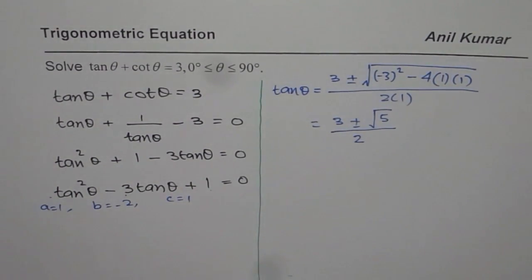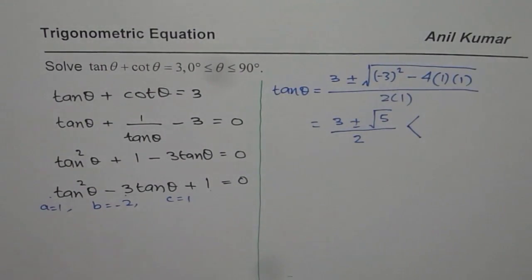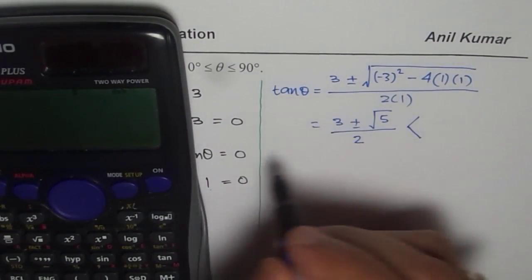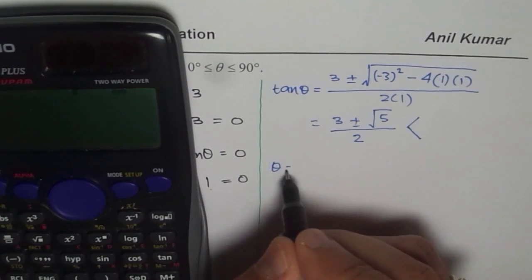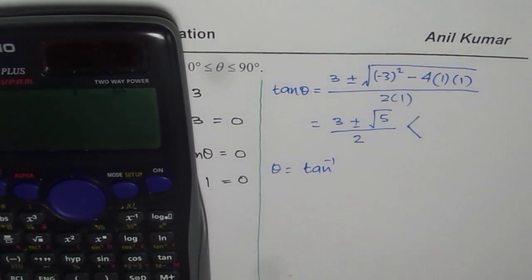That really gives us two possible values which we can calculate using calculator. What we will do here is we can find these two values and we will find θ using tan inverse of these values. So I will calculate the value and find tan inverse. That is how you should do also.